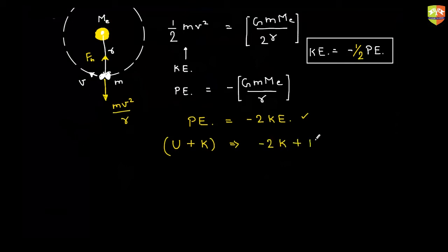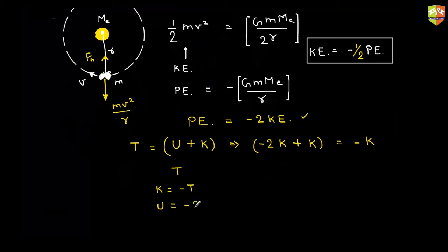So the total energy is potential energy plus kinetic energy, which equals negative of kinetic energy. So total energy is negative of kinetic energy. If you know the total energy, kinetic energy is negative of the total energy, and potential energy is two times the total energy. So you can relate kinetic energy, potential energy, and total energy and play around with that. No doubts.